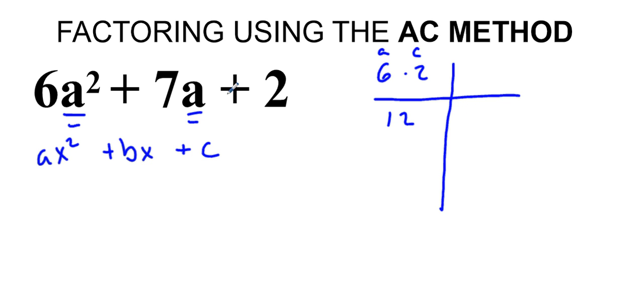Now, in order to do the AC method, this 12, if you know anything about factoring, has to equal the b value. The sum of the factors of this have to equal b. Our b value is 7, so what we're looking for are all the factors of 12 that will give us 7.